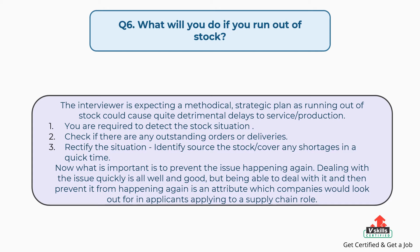Now, what is important is to prevent the issue happening again. 4. Dealing with the issue quickly is all well and good, but being able to deal with it and then prevent it from happening again is an attribute which companies would look out for in applicants applying to a supply chain role.